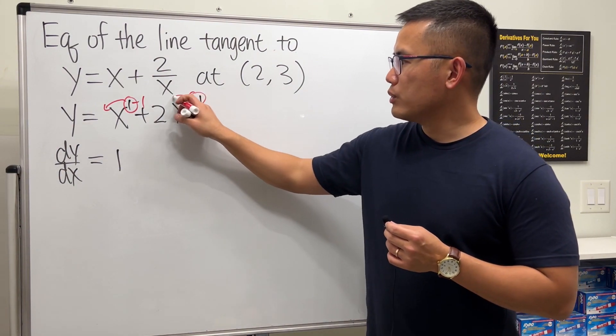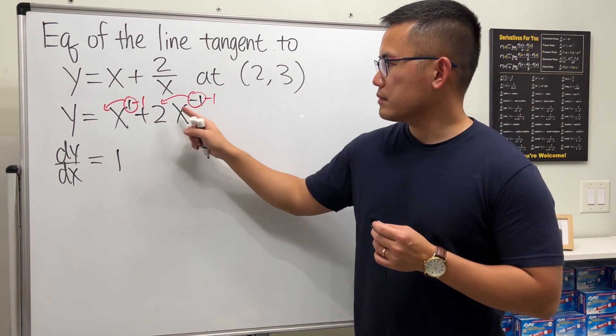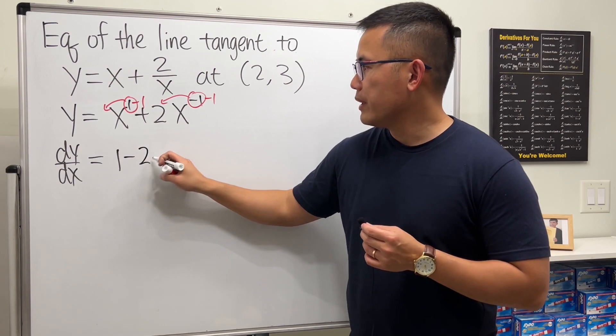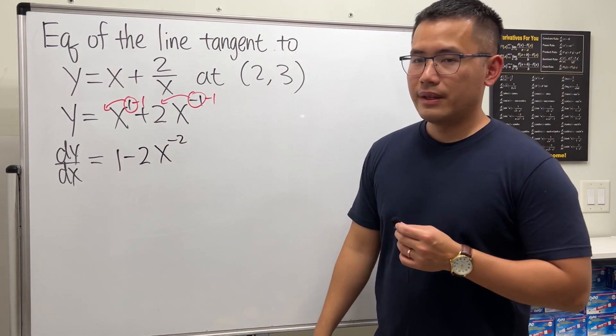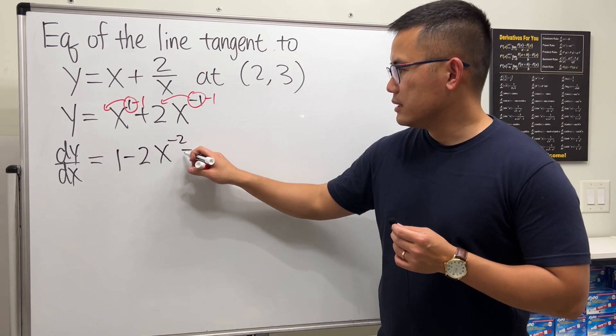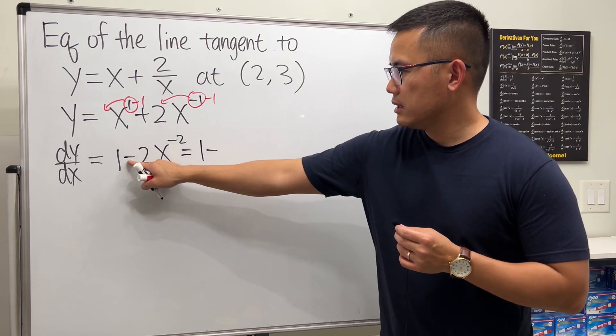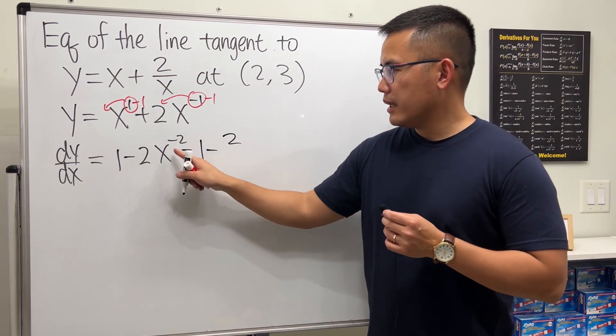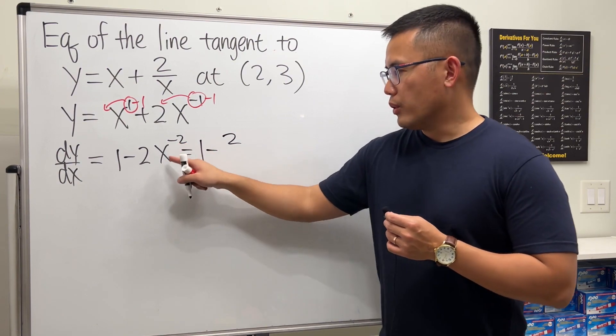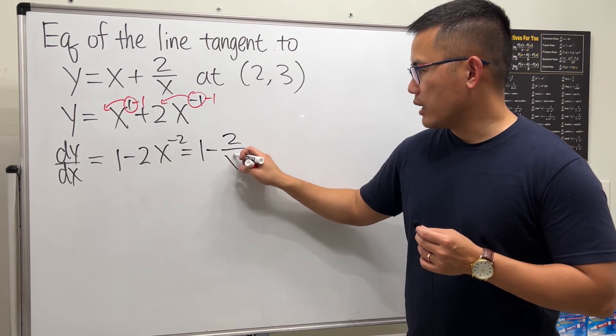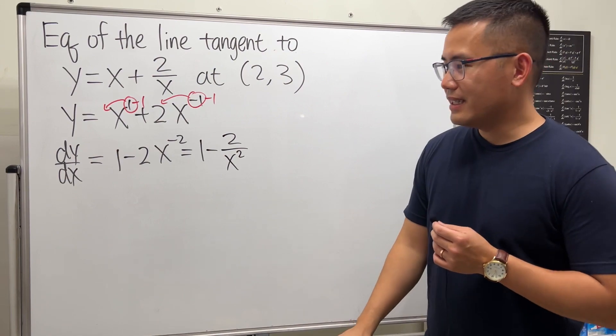For the second term, bring the power to the front and then minus 1—that's negative 2 times x to the negative 2 power. We can rewrite this as 1 - 2/x². Bring the x squared to the bottom.